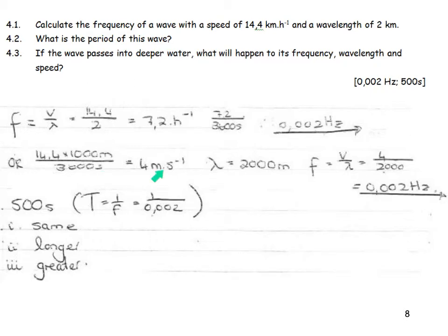And therefore, what is the frequency of the wave? I've got a wavelength over here of 2,000 meters. Frequency is speed over wavelength, and I land up with 0.02 hertz. What is the period? Period is 1 over frequency, 1 over 0.02, so it's 500 seconds.